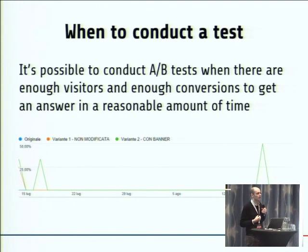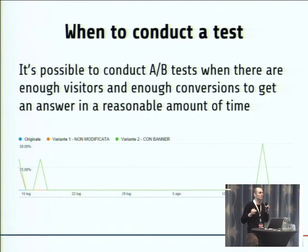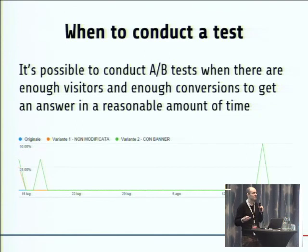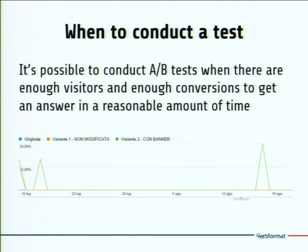When can we get a result from our test? To perform an AB test, we need two things. First, enough visitors — if we only have 10 visitors per day, we have three visitors per version, which is not enough. Our test will take months to get results. And of course, we also need conversions — it's not enough to just have visitors on the page; the visitors should actually click our submit button, otherwise we can't measure performance.